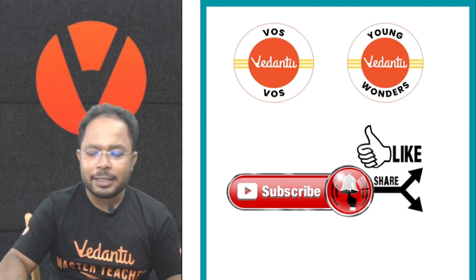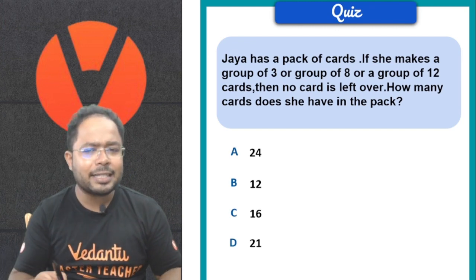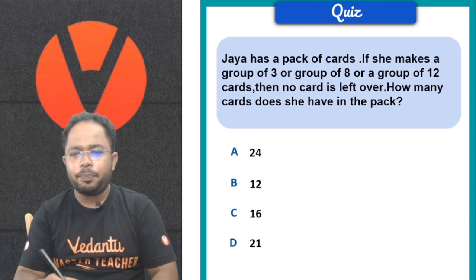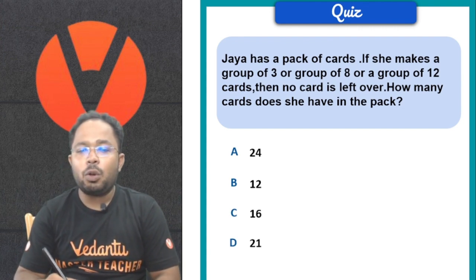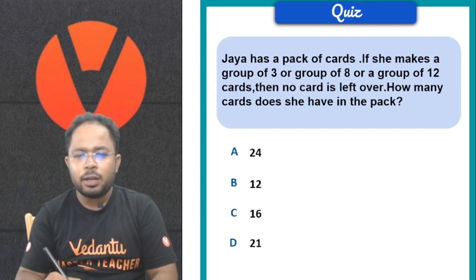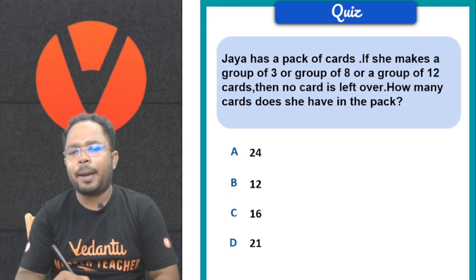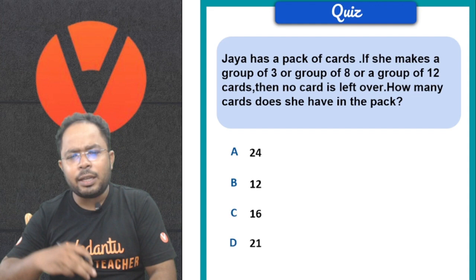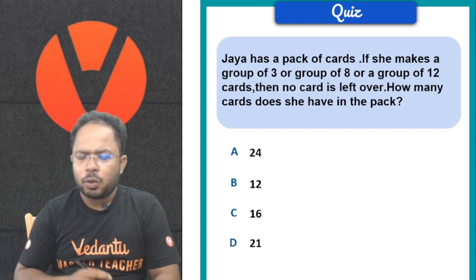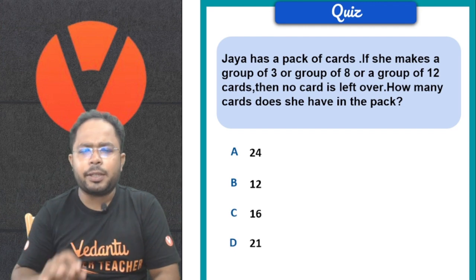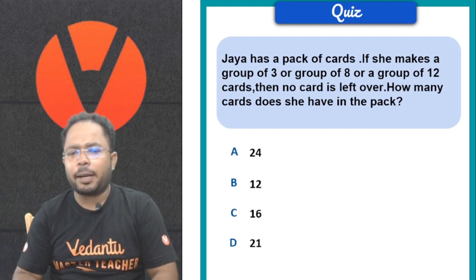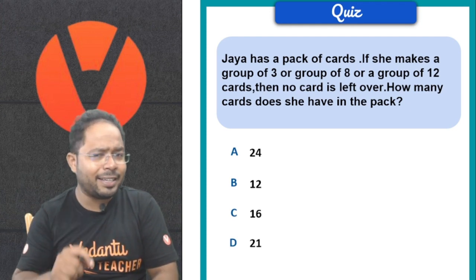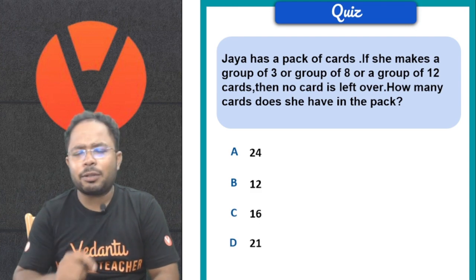Chalo phir, sab se pehla sawaal leleyta hai. Jaya has a pack of cards. If she makes a group of 3, or group of 8, or a group of 12 cards, then no card is left over. How many cards does she have in the pack? Jaya ke paas pack of cards hai — woh 3 ka group banana chahti hai, ya phir 8 ka, ya phir 12 ka, jis se koi card bache nai. So kitne cards hone chahiye pack me? Jaldi se pause karo button ko aur ye find karne ki koshish karo.